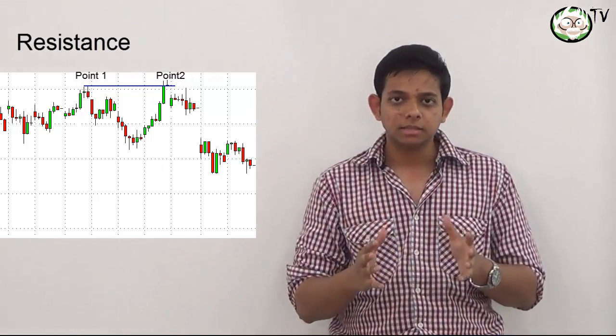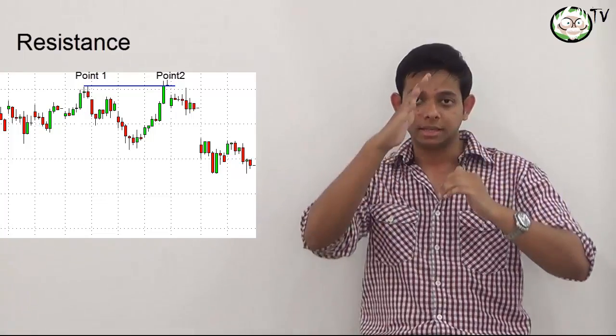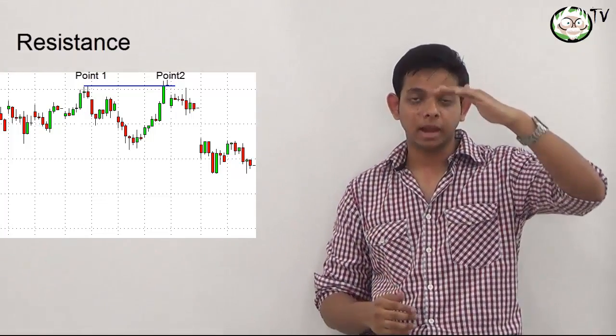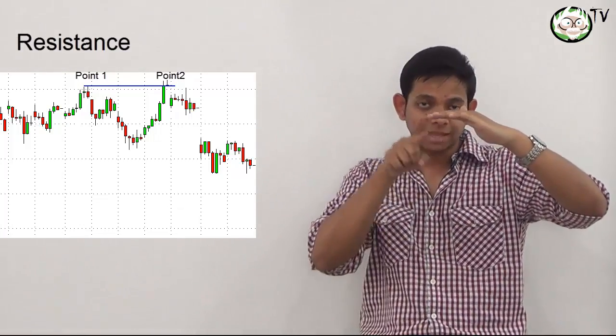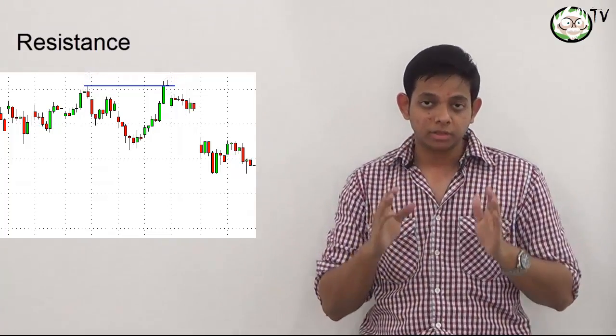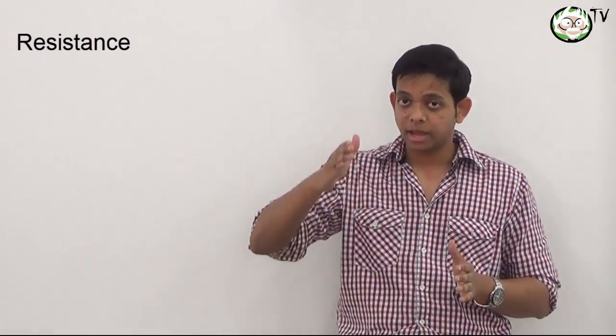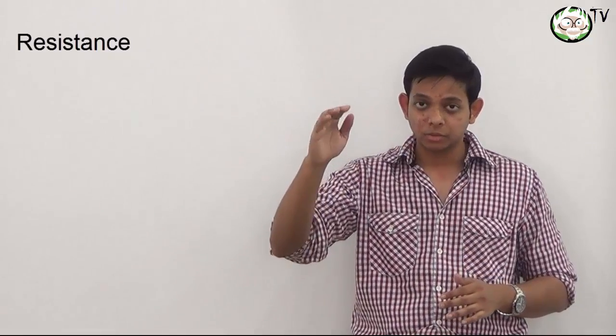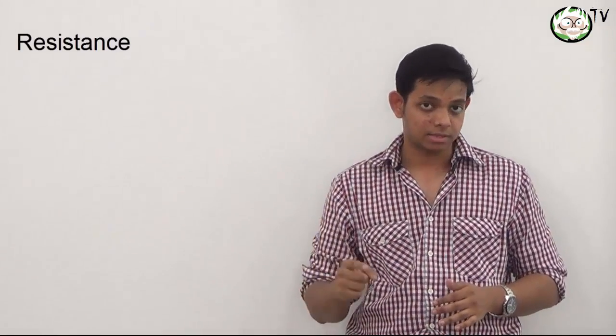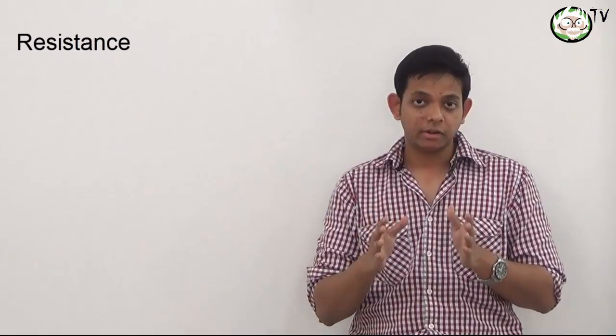So basically, to summarize, resistance is a point where markets rally and then decline, creating an area of supply, and the market turnaround point is your resistance. Generally, when markets move up and reach that same point where the market turned around last time, that is your area of supply.